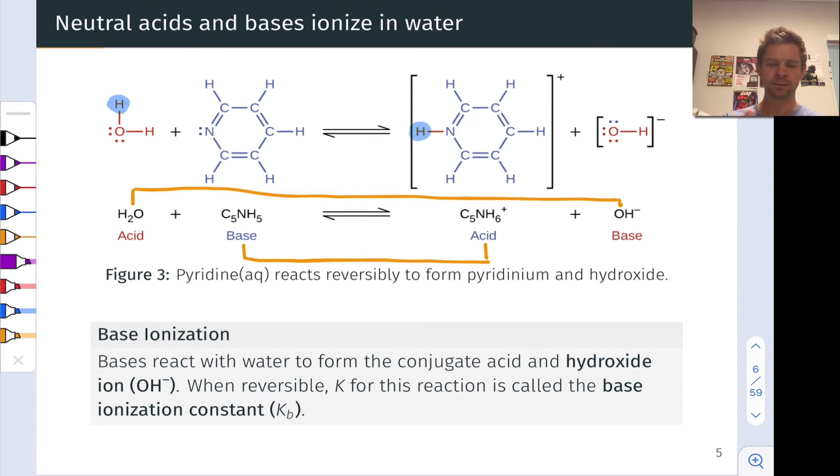And notice here again that this reaction is reversible. We've got a reversible reaction arrow right here. The reaction does not go to completion at equilibrium. Pyridine is an example of a weak Bronsted base. And just like we did for the acid ionization case, we can talk about a base ionization constant, capital K sub B, and this is the equilibrium constant for this reaction.